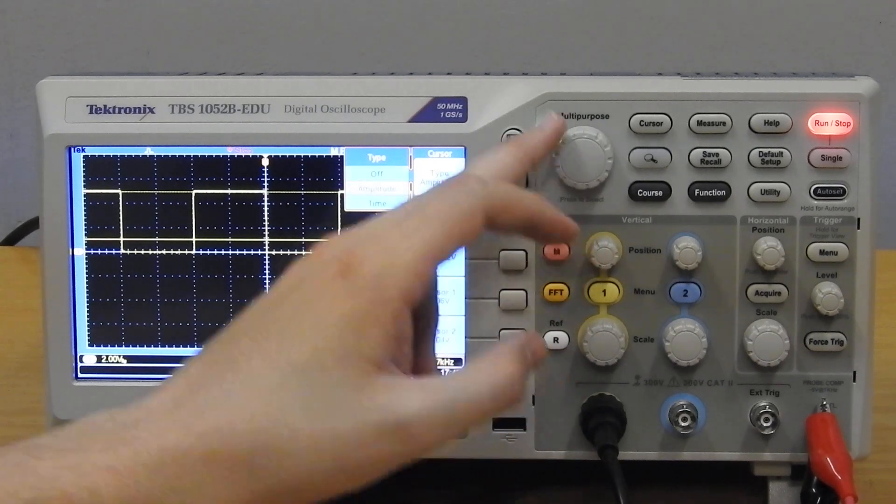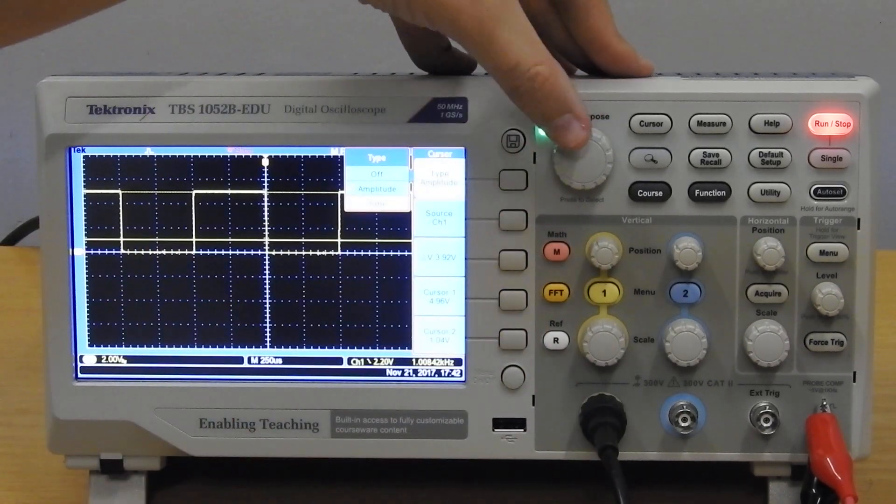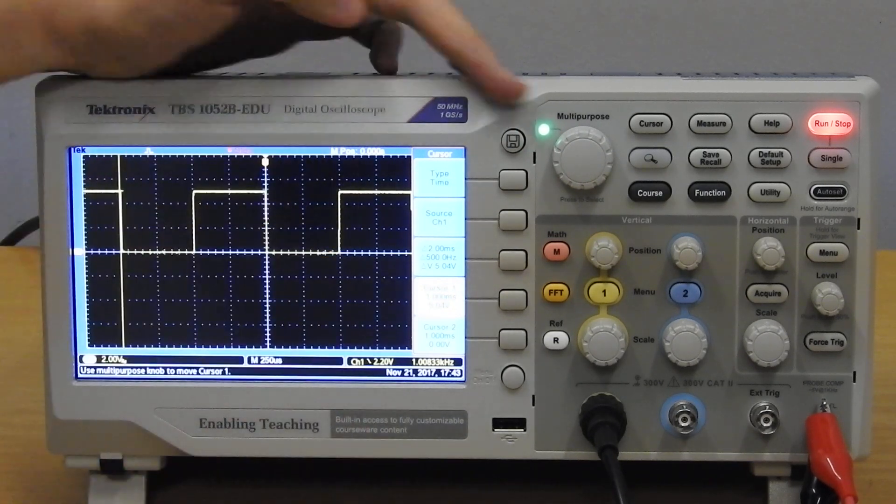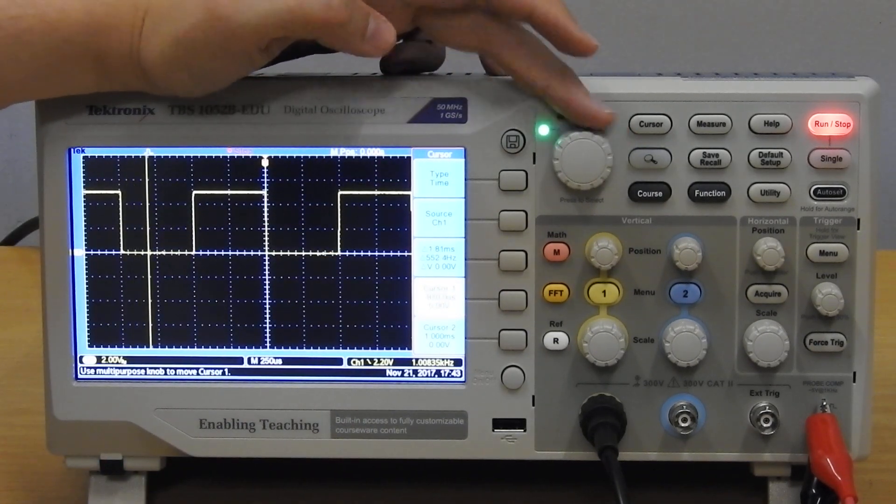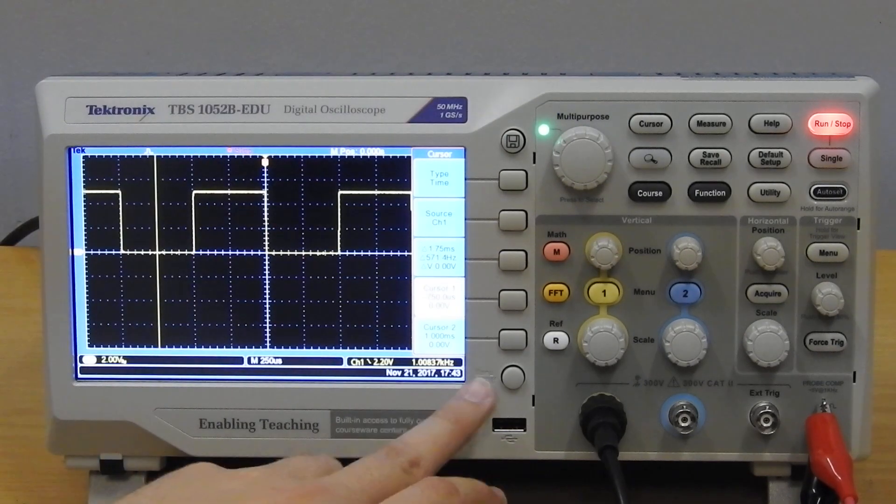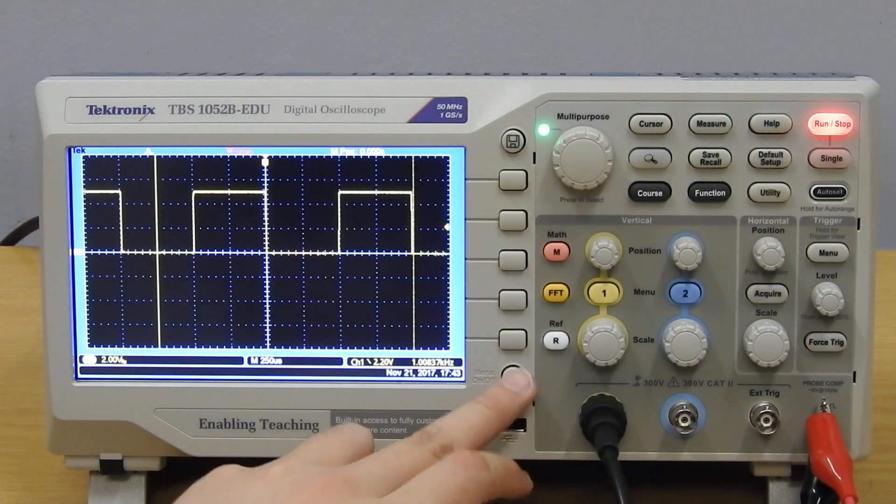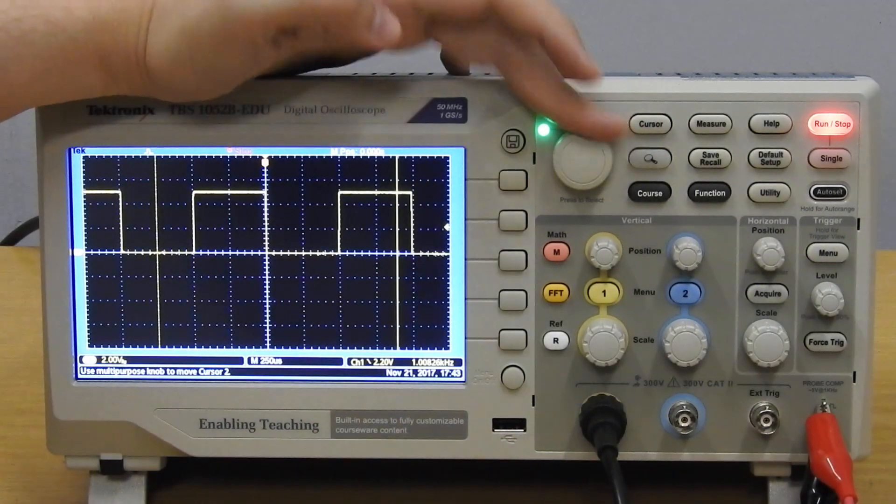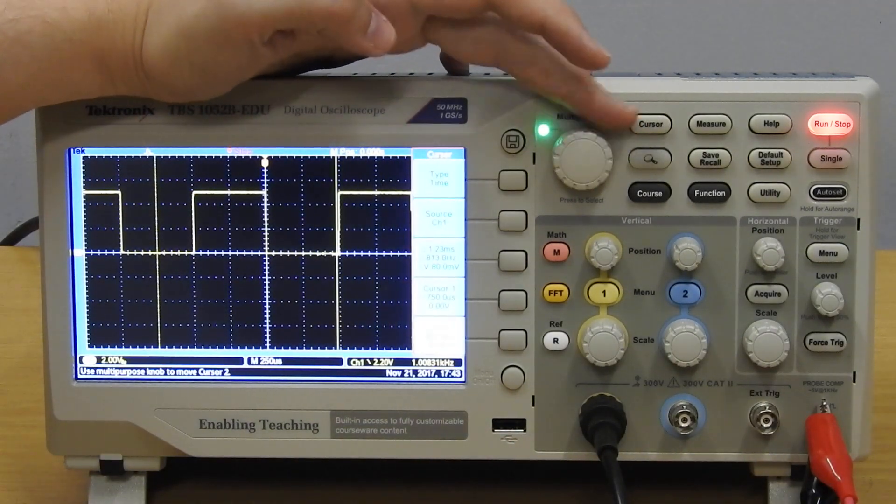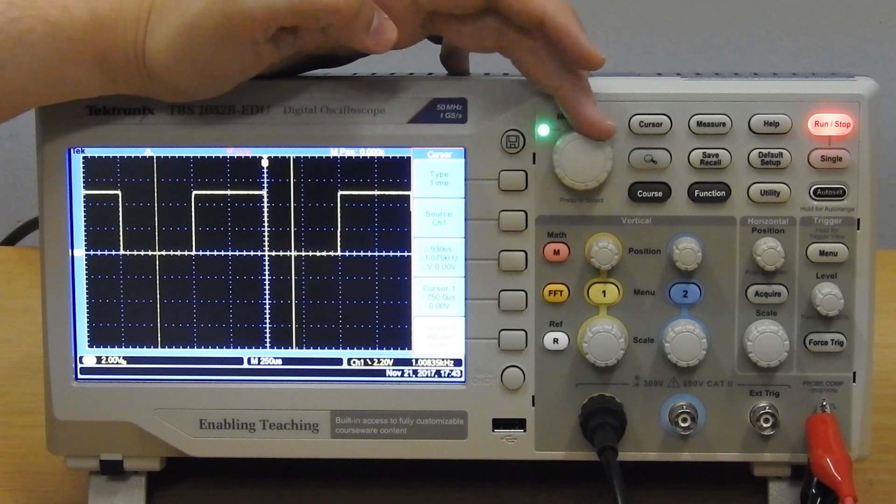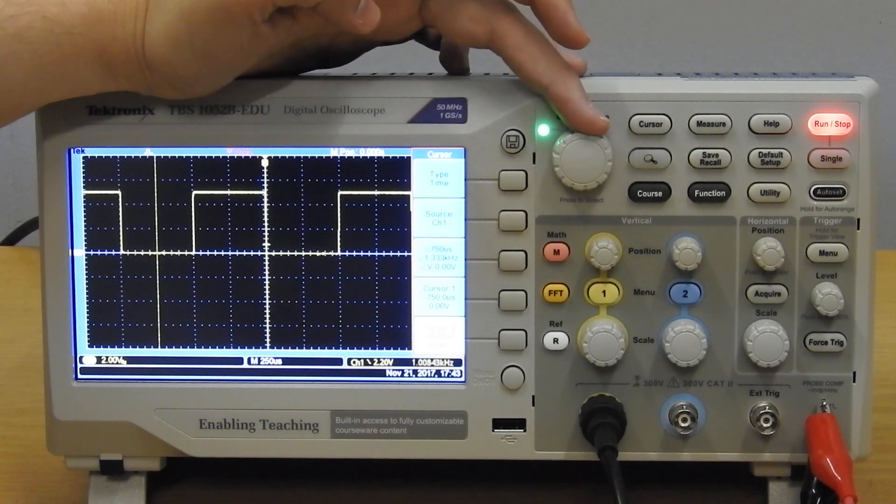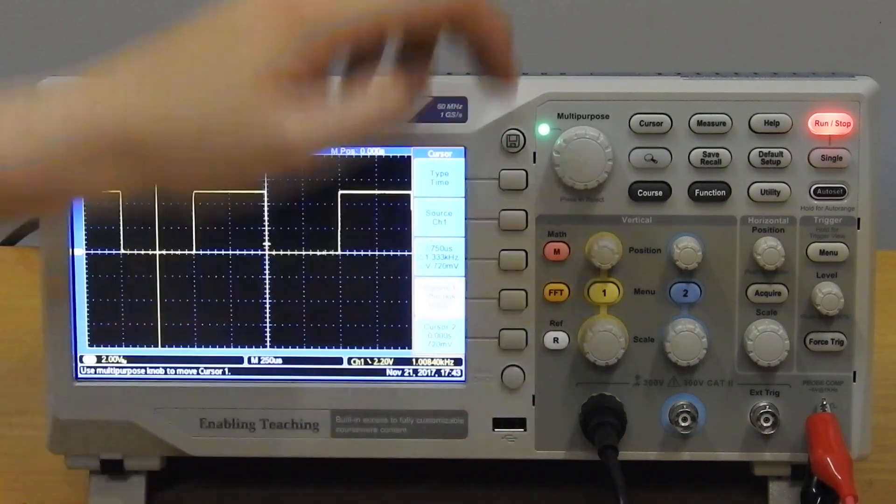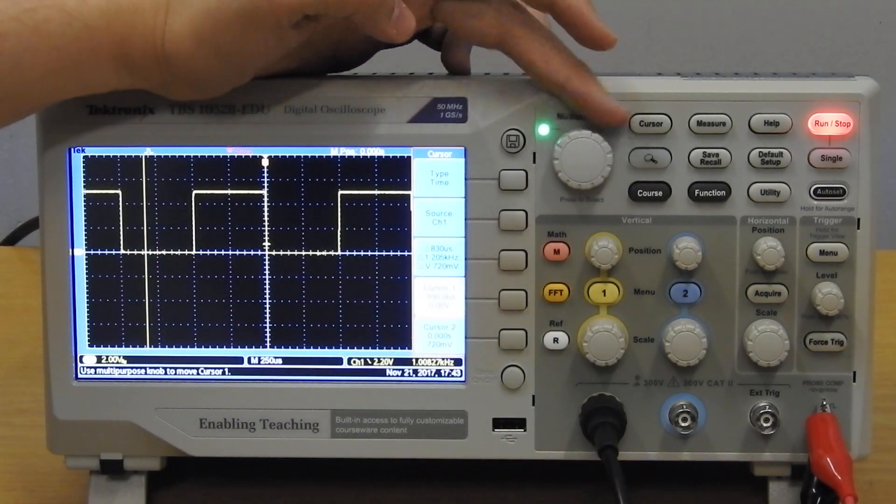We go to time. The two cursors is now on the sides. Cursor 2 is behind this menu here for now, so let's bring it out of it. Let's measure this signal on the time domain.